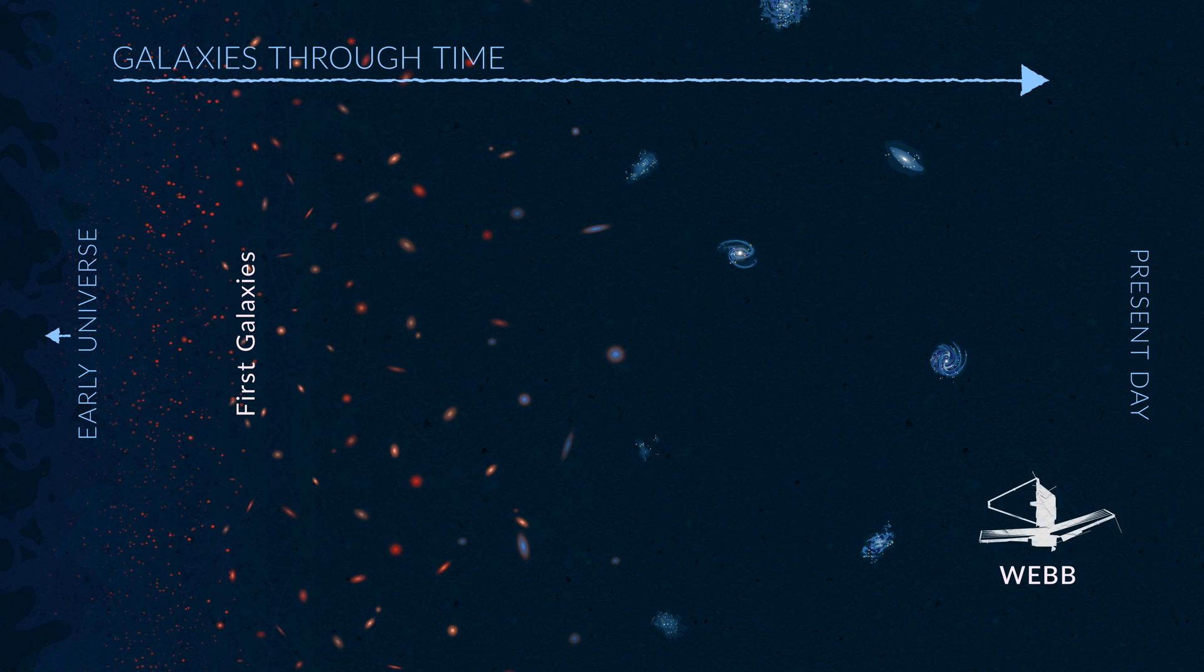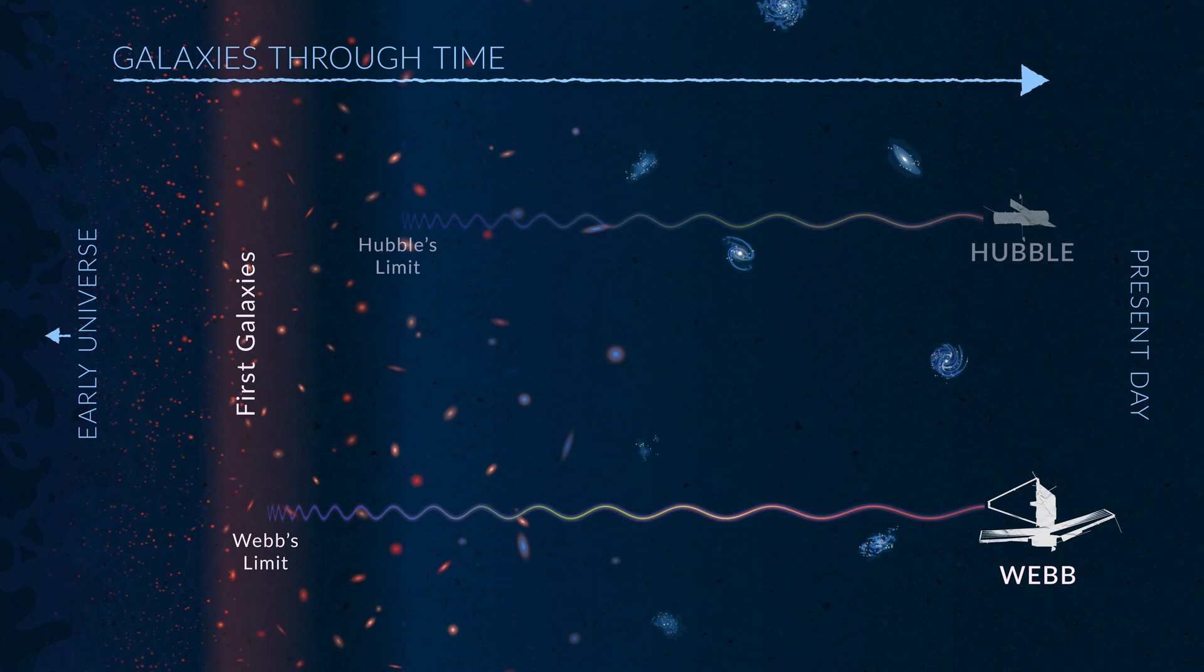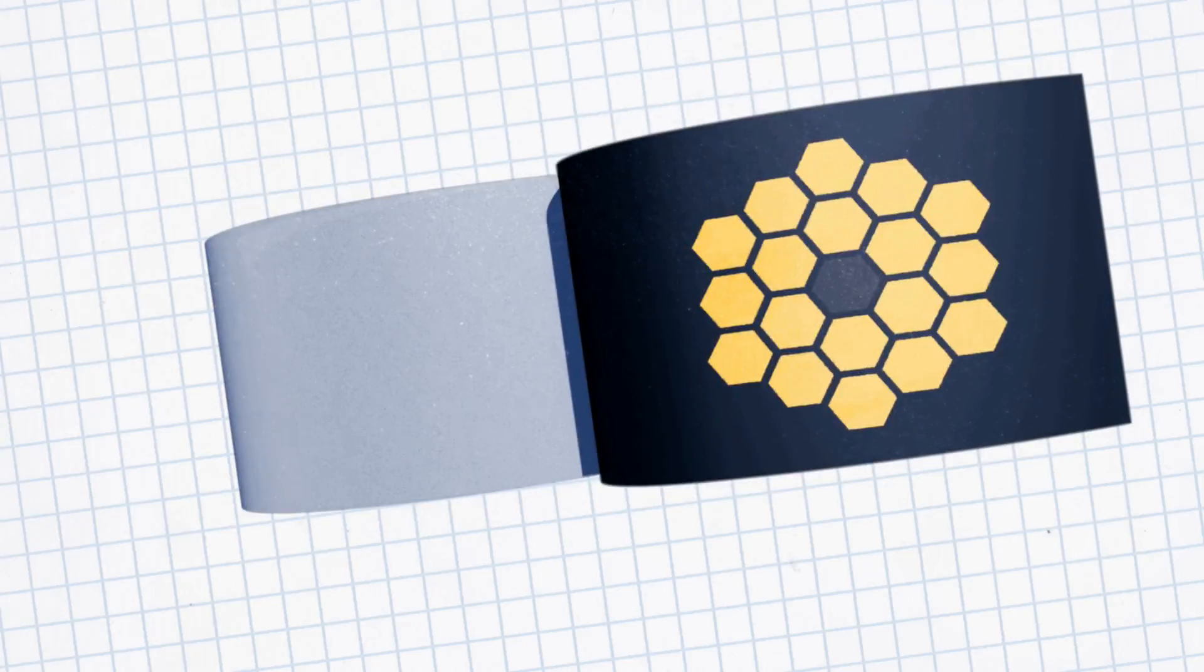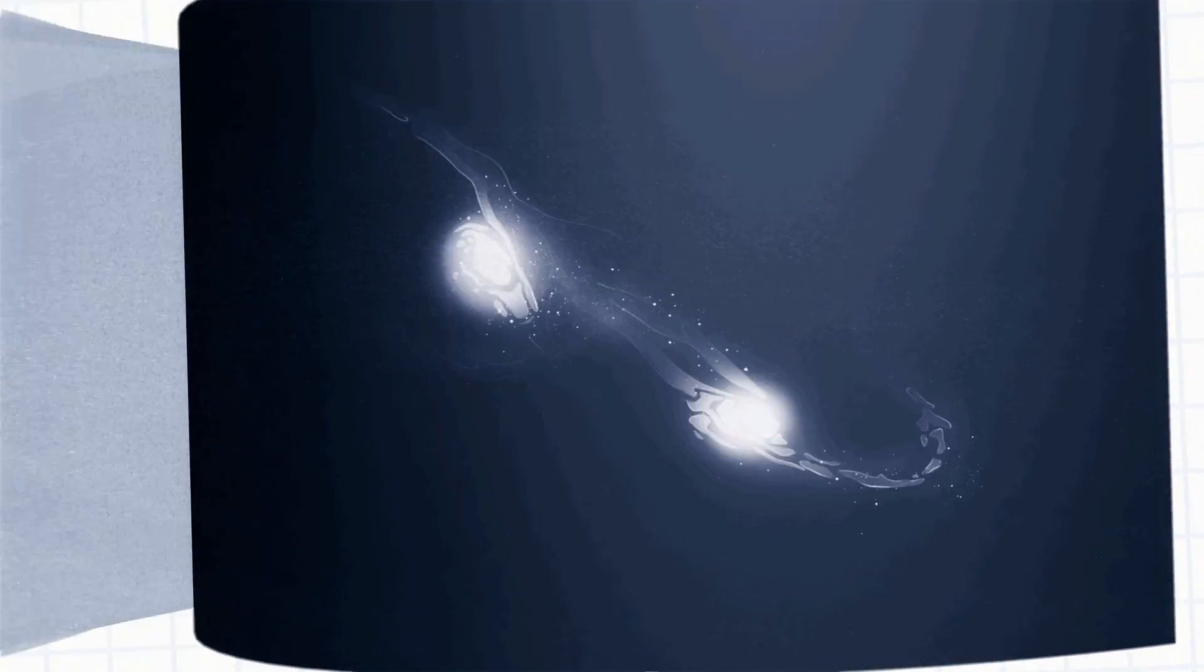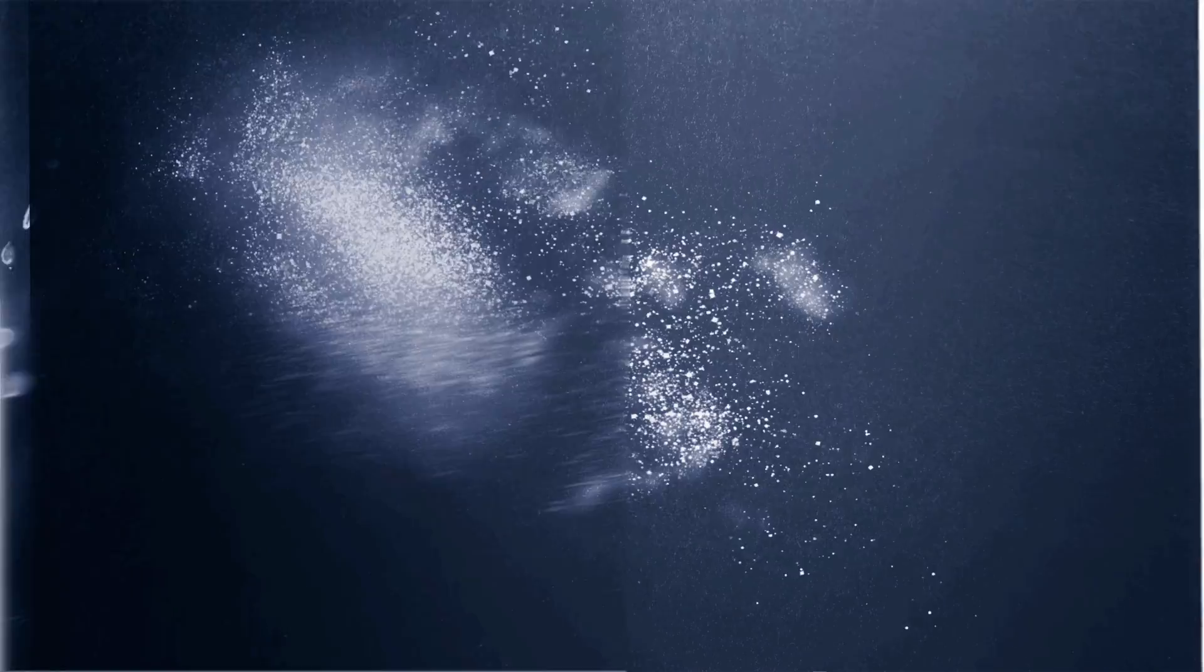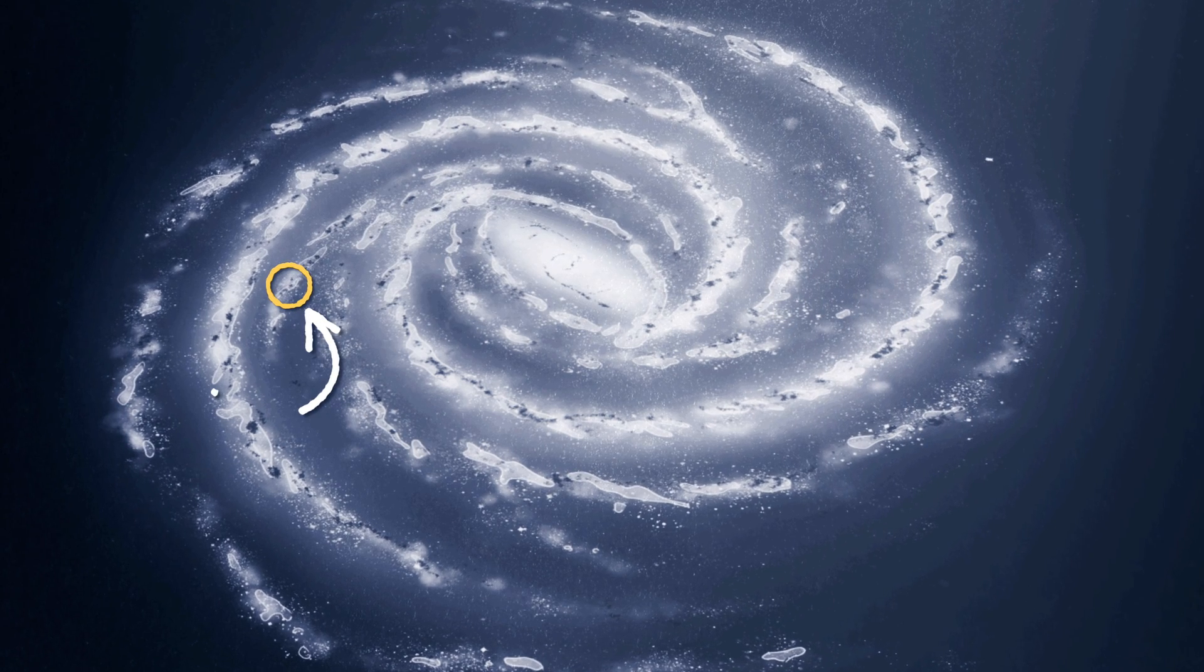NASA's James Webb Space Telescope was specially designed to detect the ancient, stretched light from the first galaxies. Webb will fill in the blank pages in the flipbook of galactic history, and examine the middle eras in new detail, providing essential insight into some of our biggest questions. How does the universe work? And how did we get here?